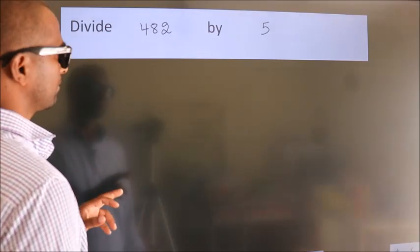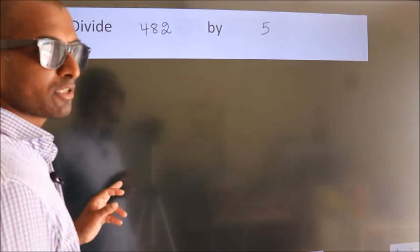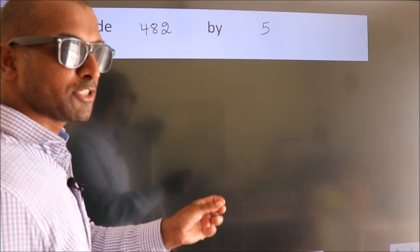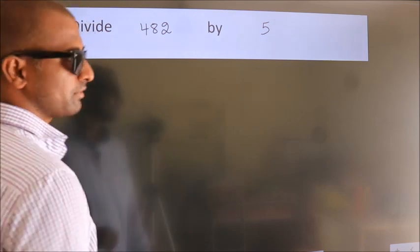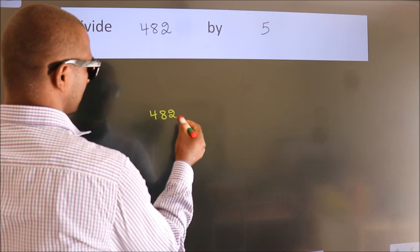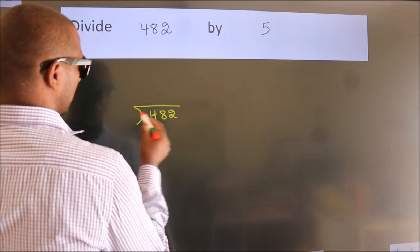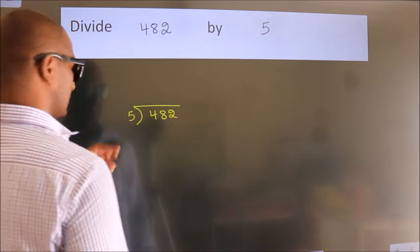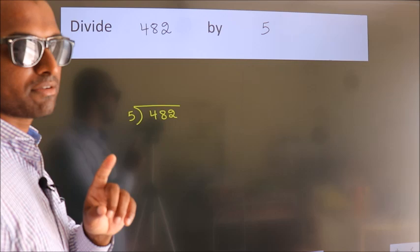Divide 482 by 5. To do this division, we should frame it in this way: 482 here, 5 here. This is your step 1.